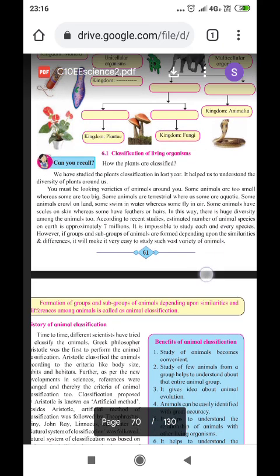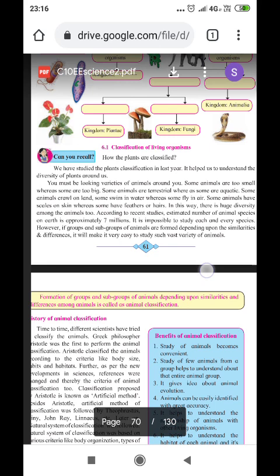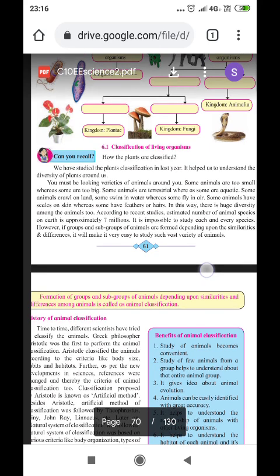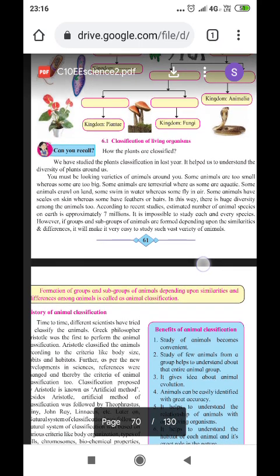There are varieties of animals around us. Some animals are too small, whereas some are too big. Some animals are terrestrial, that is, they are living on the land, and some are aquatic, that is, living in the water.